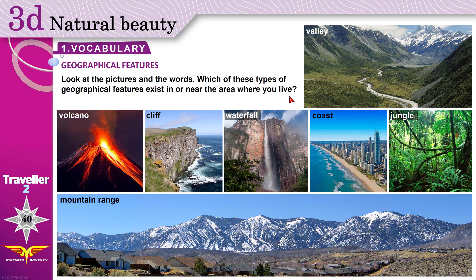I live in Jeddah — no volcanoes, cliffs, waterfalls, or jungles near Jeddah. But Jeddah is a city by the sea, similar to the one you see in the picture, so yes, there is a coast. And there is Fatima Valley not far away from Jeddah, and there is the Hejaz Mountains — that is a mountain range called Hejaz — also not far away, near Jeddah.